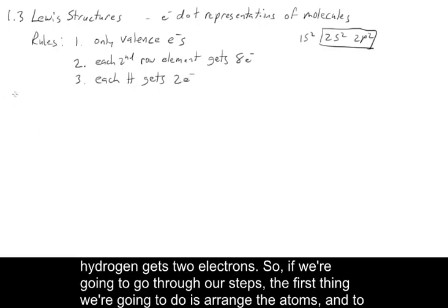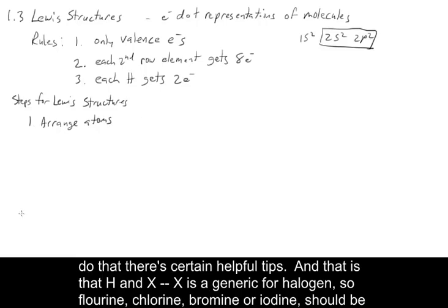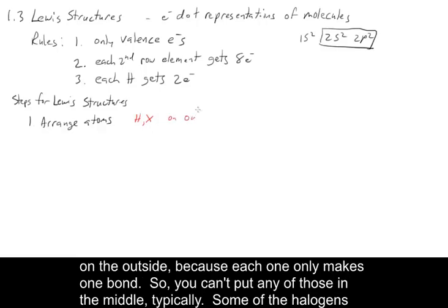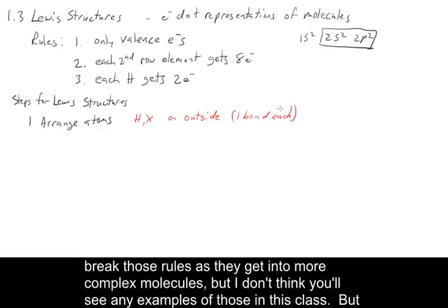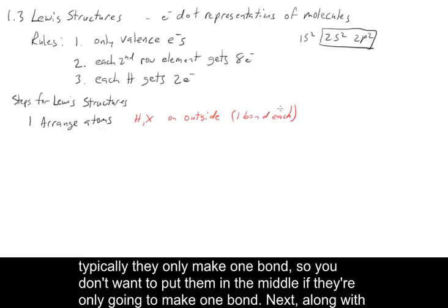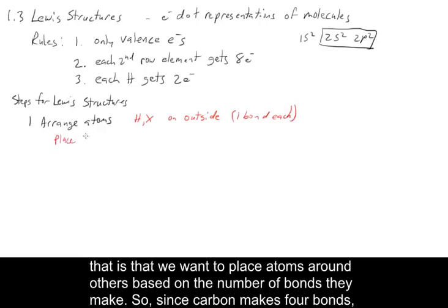If we're going to go through our steps, the first thing we're going to do is arrange the atoms. There are some helpful tips: H and X — where X is a generic term for halogen, so fluorine, chlorine, bromine, or iodine — should be on the outside, because each one only makes one bond. You can't put any of those in the middle typically. We want to place atoms around others based on the number of bonds they make.